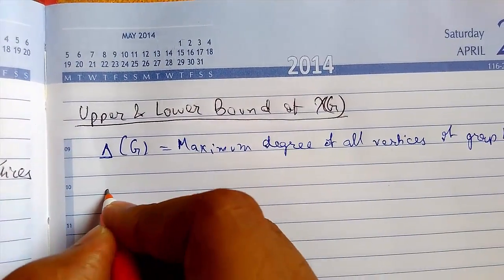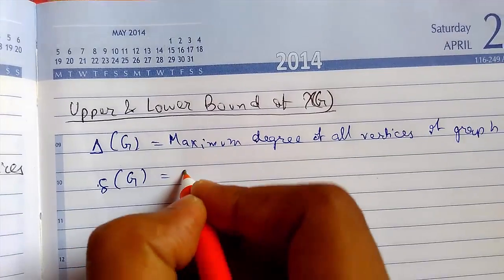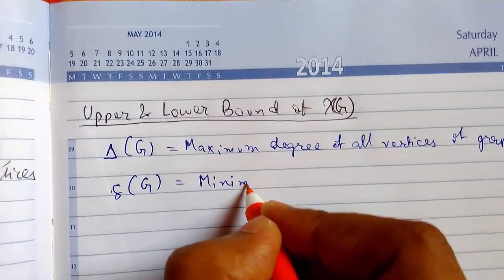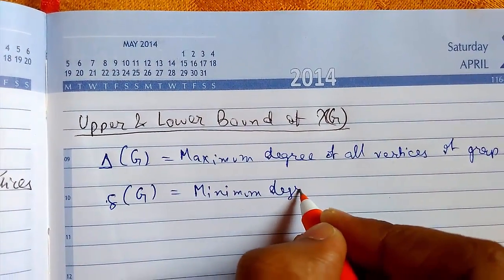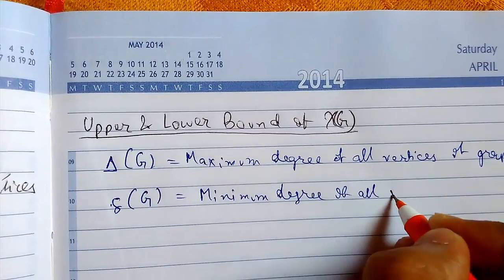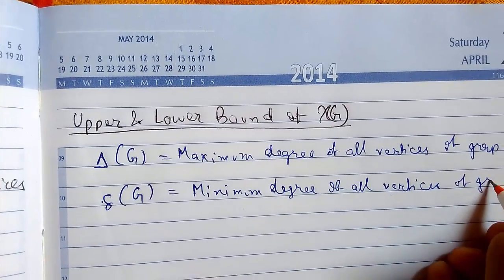And this δ(G) we define as minimum degree of all vertices of the graph G.